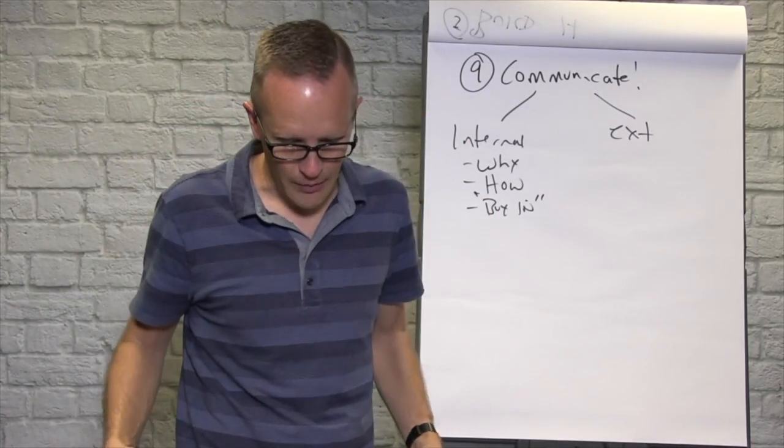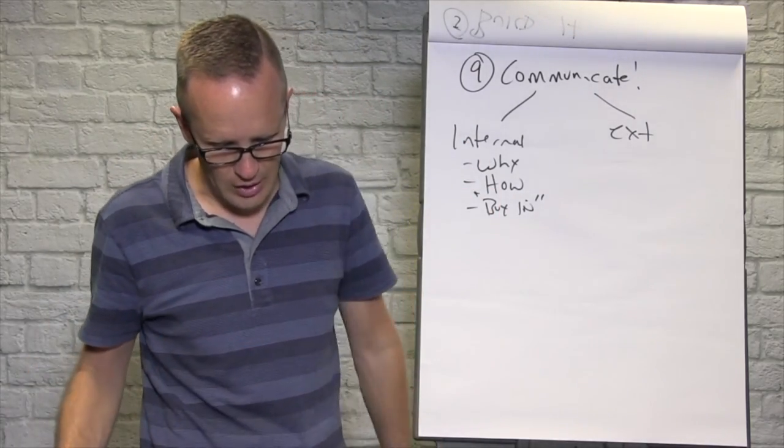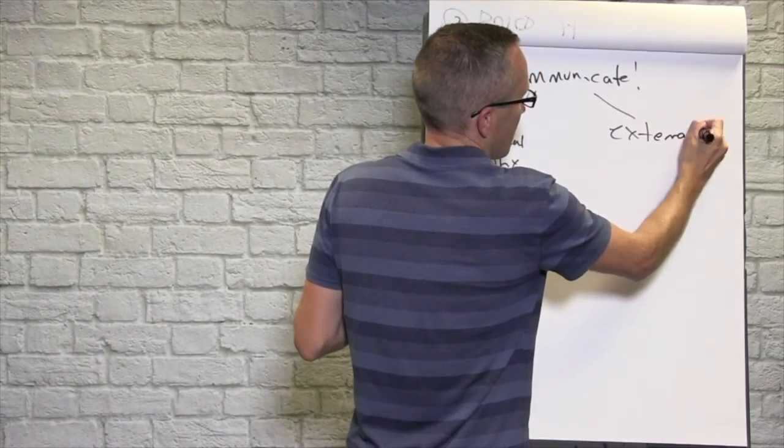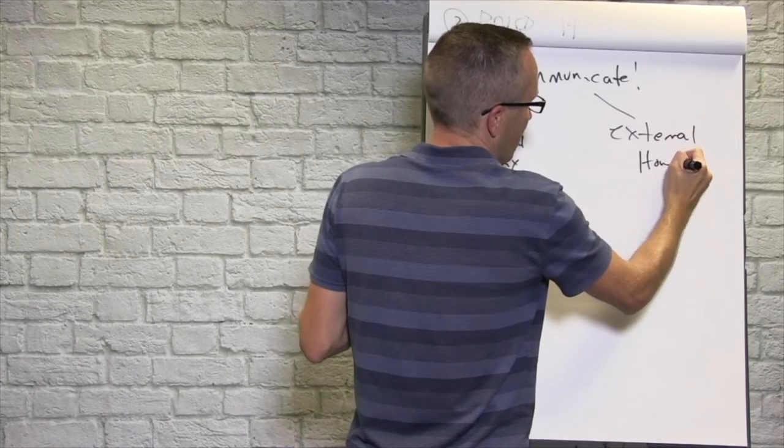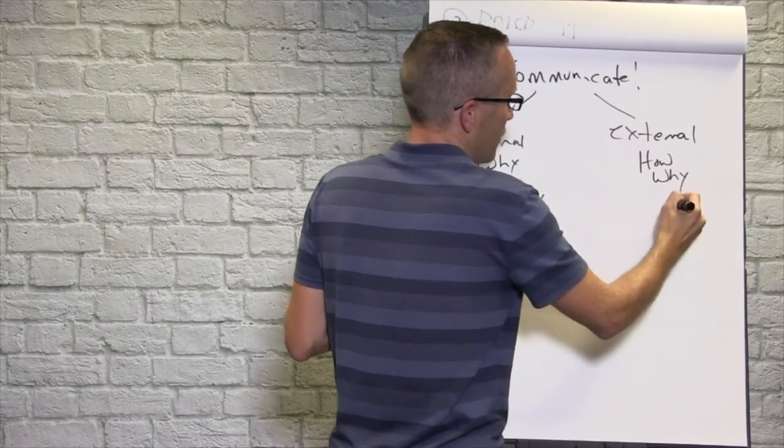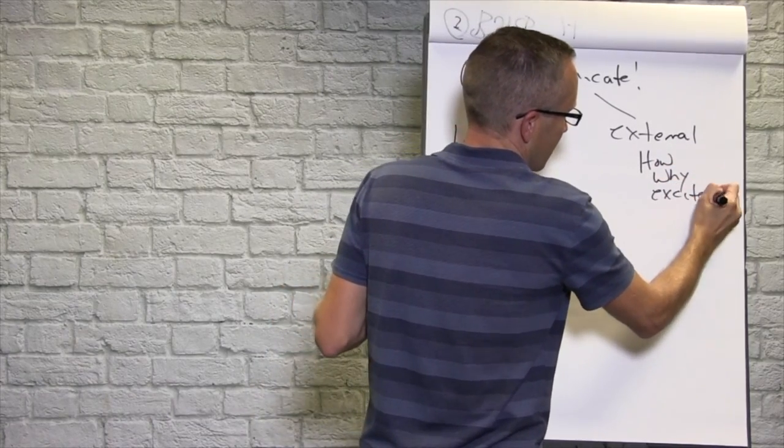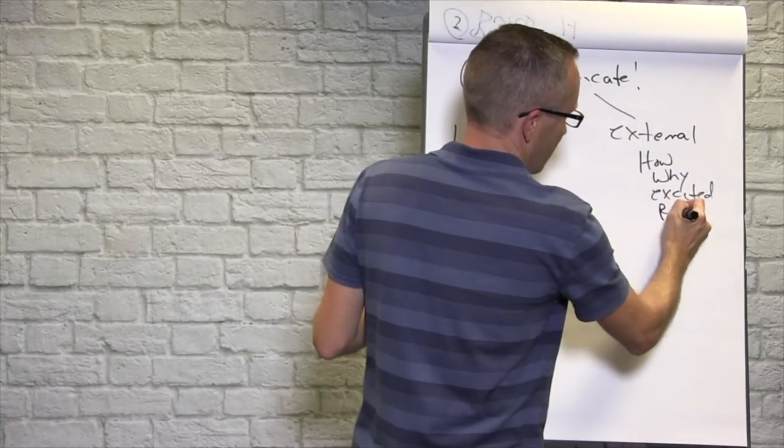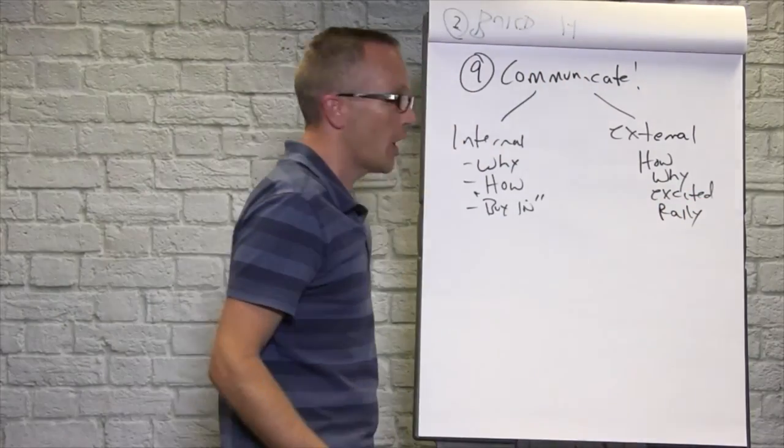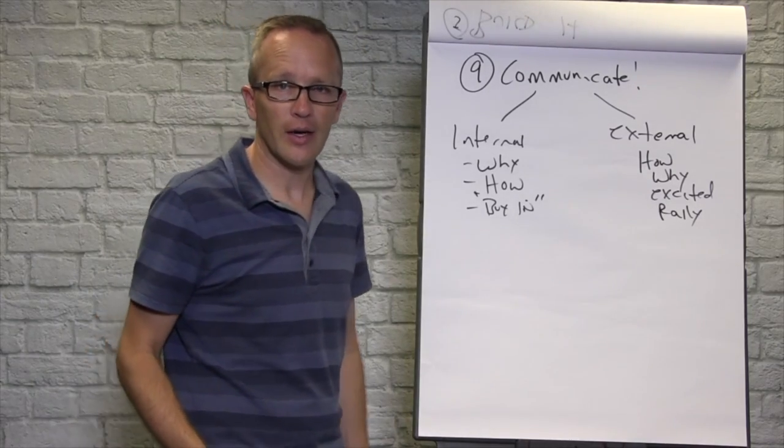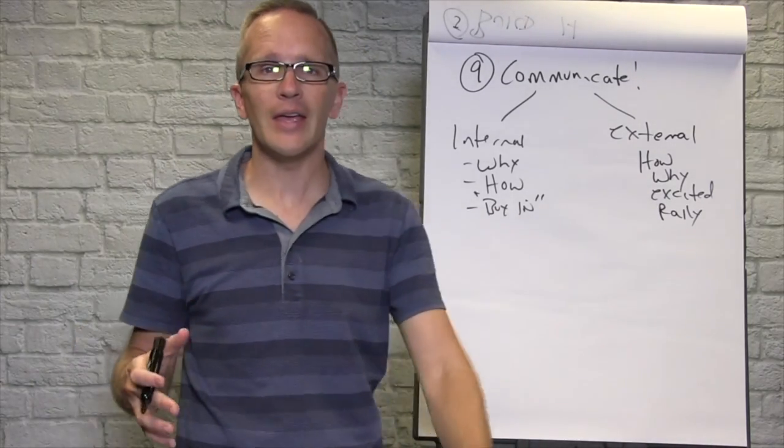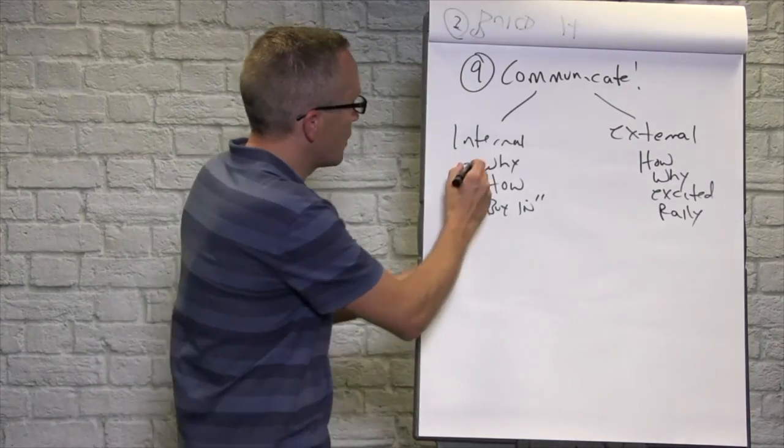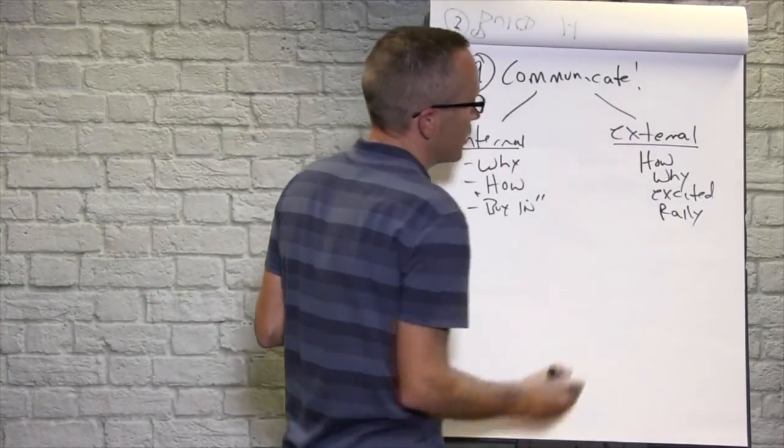Your people that you're leaning in on. External communication is how and why—you're trying to get people excited and rally behind this. You're helping people understand that this is part of a bigger picture of where we're going. So communicate, communicate, communicate.